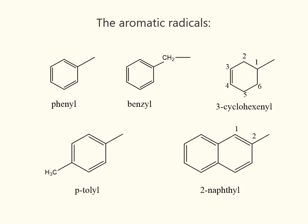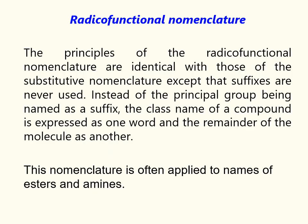The most widespread aromatic radicals are shown on this slide. The next type of systematic nomenclature is radical functional nomenclature. Its principles are identical with those of substitutive nomenclature, except that suffixes are never used. Instead, the class name of a compound is expressed as one word and the remainder of the molecule as another. This nomenclature is often applied to names of esters and amines.